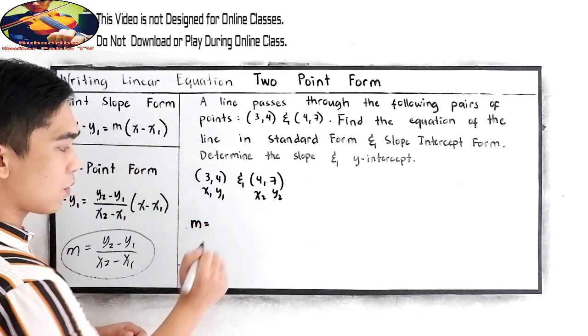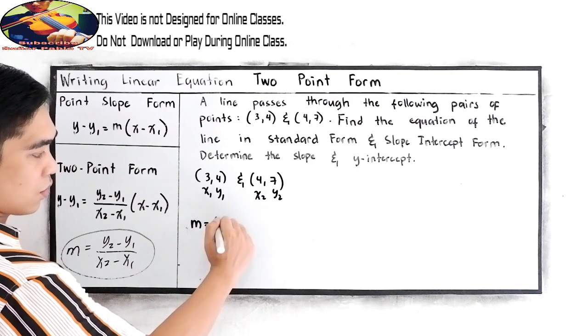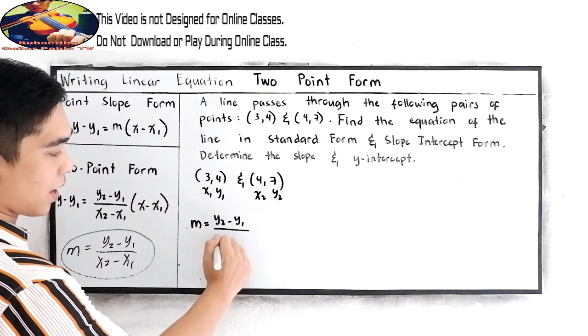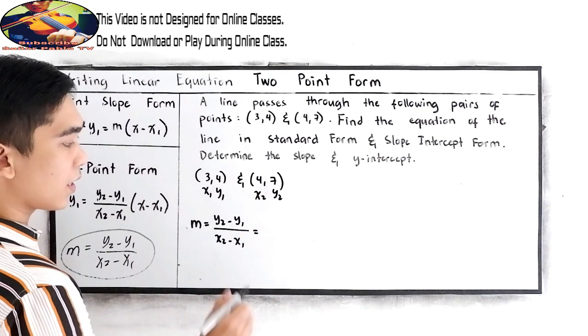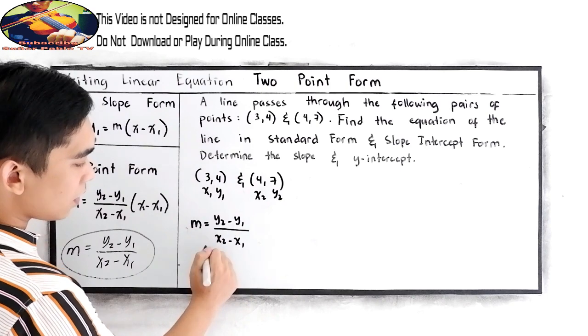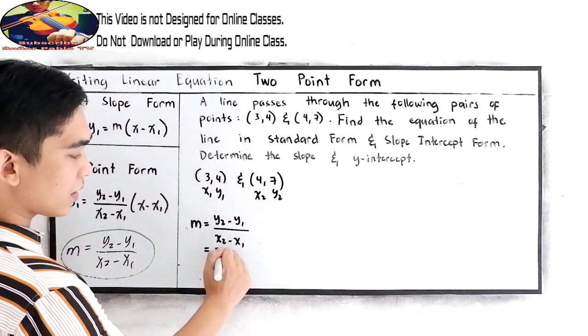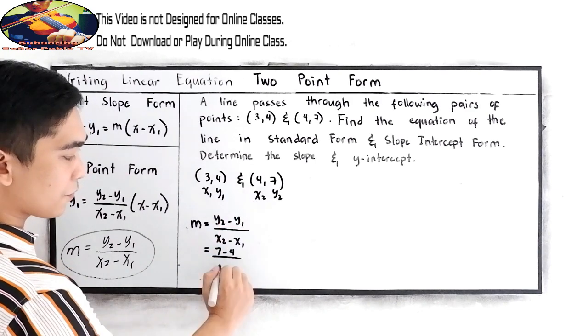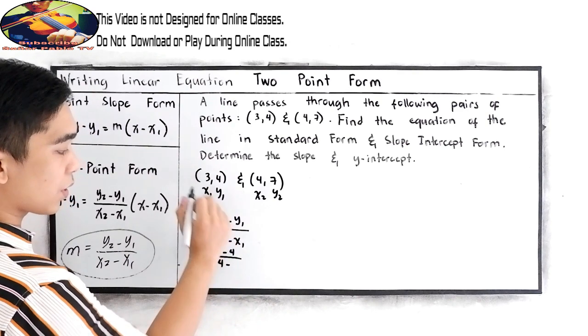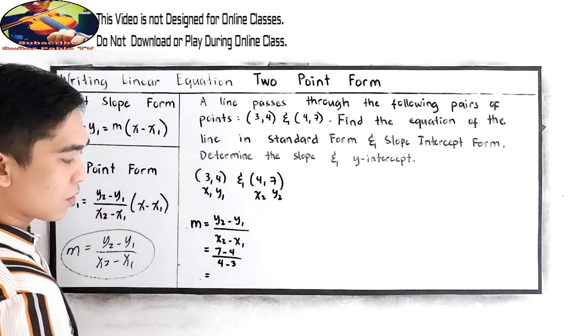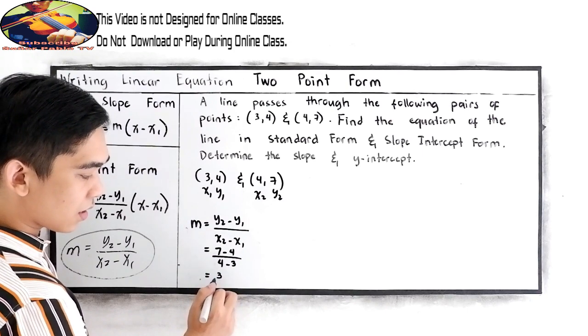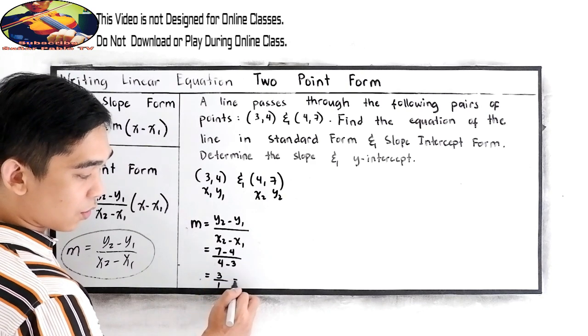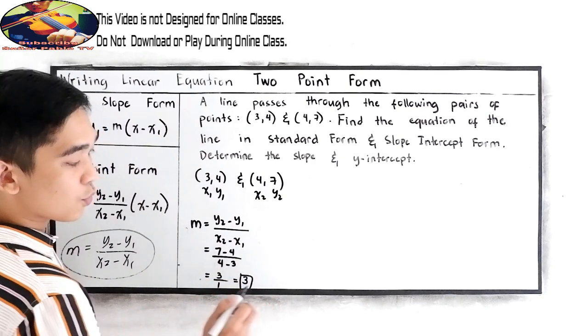So, m is equal to formula y sub 2 minus y sub 1 all over x sub 2 minus x sub 1. Then, substitute. So, y sub 2 is 7 minus y sub 1 is 4 over x sub 2 is 4 minus x sub 1 is 3. So, we have 7 minus 4, that is 3, over 4 minus 3, which is 1. Or simply, 3. This will be our slope.